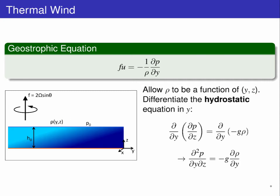Let's start by differentiating the hydrostatic equation in y, giving the horizontal change in the vertical pressure gradient as equal to the horizontal change in density times gravity.